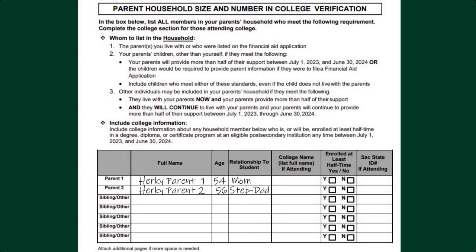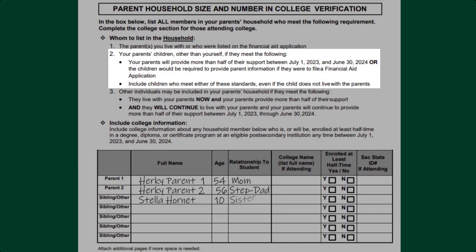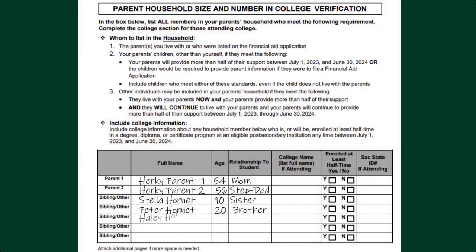In addition to your parents, list your parent's other children if they meet the following: your parent will provide more than half of their support between July 1, 2023 through June 30, 2024, and any children who also file a financial aid application. Include children who meet these standards even if they do not currently live with your parents.